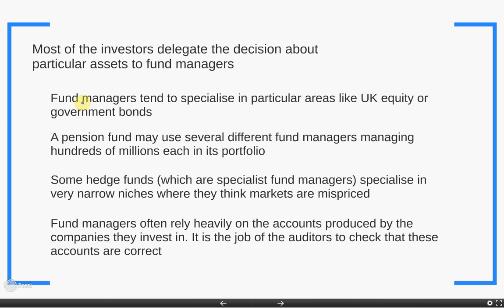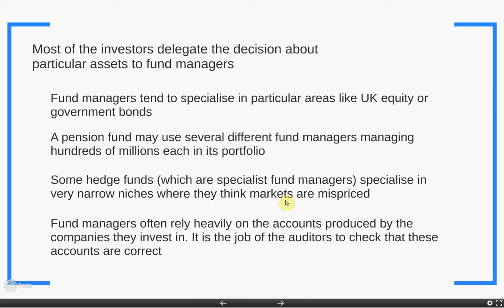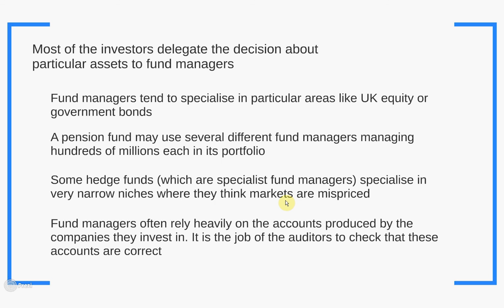A pension fund itself may use several different fund managers, each managing hundreds of millions in its portfolio. Some pension funds have over £10–20 billion in them, and they might give £200 or £300 million to each of a number of fund managers to plug together an overall investment portfolio, with each fund manager being a specialist in a niche area. Some hedge funds specialise in very narrow niches where they think markets are mispriced — there's one hedge fund, for example, that just looks for errors that banks have made in transactions, and whenever they see an error they trade on the other side of it to make money.